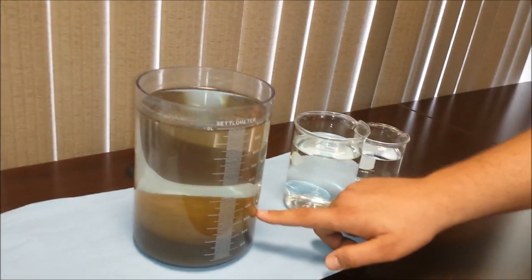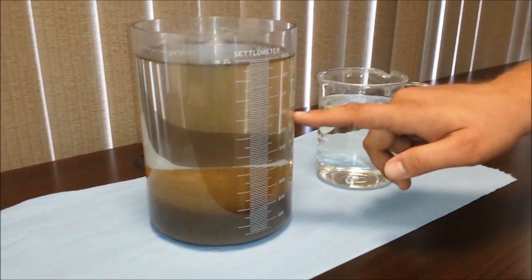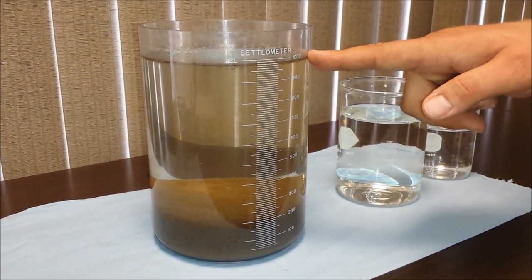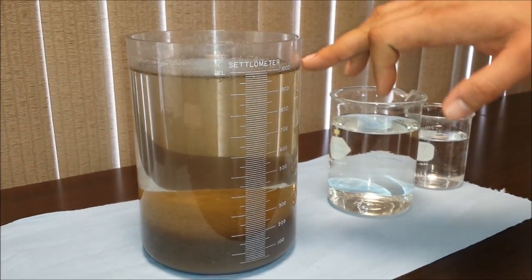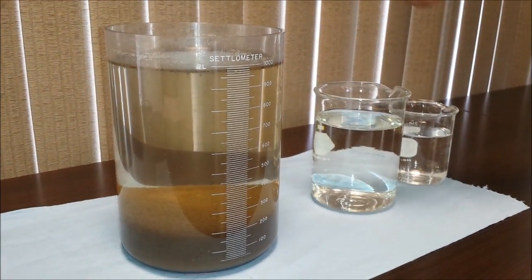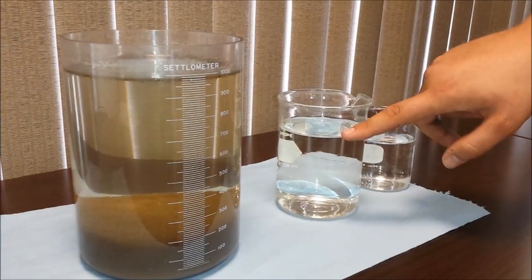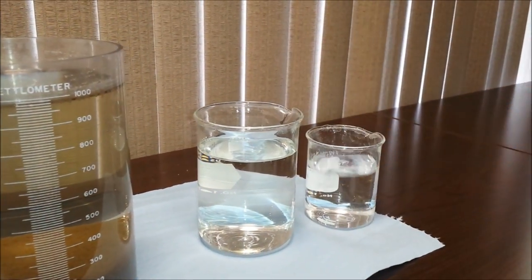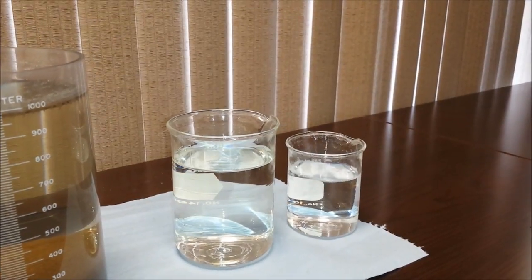This is a representation of what's happening in our clarifier. We have a sludge blanket, and then we have supernate that's mostly clear up here. And as it flows out of the clarifier, it goes through filters, and then it gets contacted with chlorine for disinfection. And then you get this product right here—crystal clear, beautiful color.